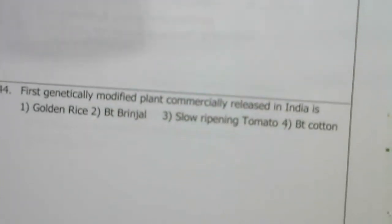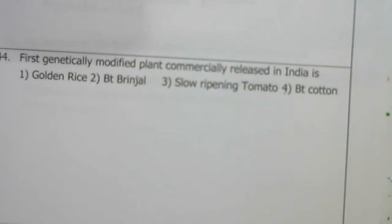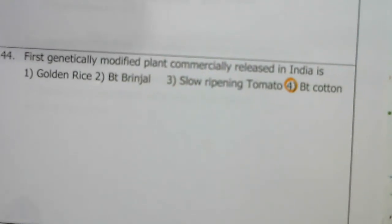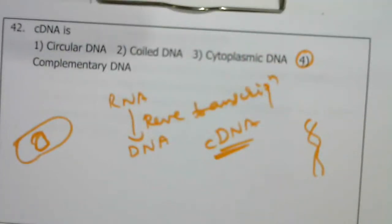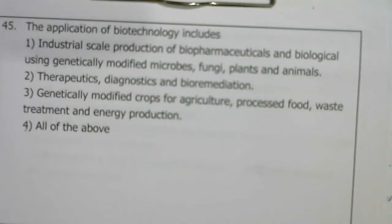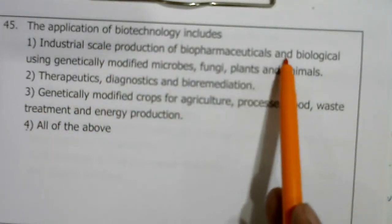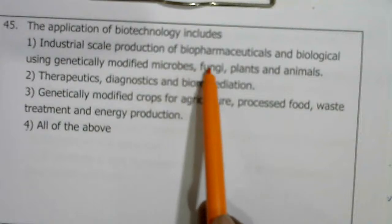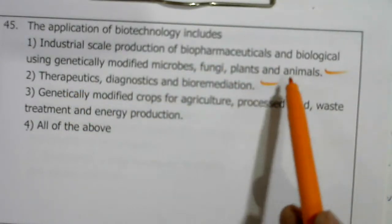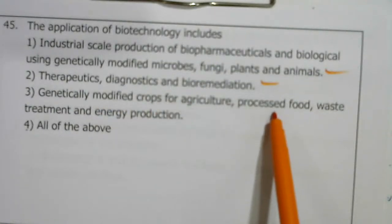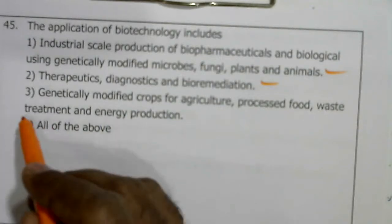Bt toxin is actually a protein — a protoxin. The first genetically modified plant commercially released in India is Bt cotton. Applications of biotechnology include industrial-scale production of biopharmaceuticals using genetically modified microbes, fungi, plants, and animals; therapeutic and diagnostic tools; bioremediation; genetically modified crops; waste treatment and energy production. So all of these are correct.